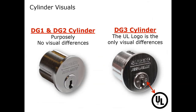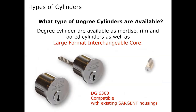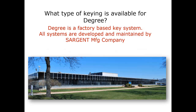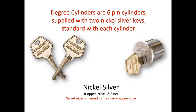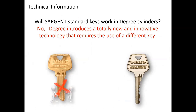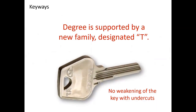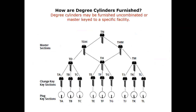Looking at the two cylinders themselves — DG1 and DG2 — visually there is no difference. DG3 will have a UL symbol on it identifying it as UL 437. DEGREE is available with rim cylinders, mortise cylinders, key and lever, and Sargent's large format interchangeable core. DG3 is a factory-based system and all systems are developed and maintained by Sargent manufacturing. It's a six-pin system and you're supplied with two nickel silver keys standard. Nickel silver is copper, nickel, and zinc — called nickel silver because of its silverish appearance. None of Sargent's conventional keyways will work with DEGREE — it's a brand new T keyway with no weak cut points.